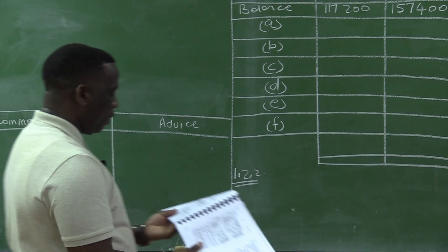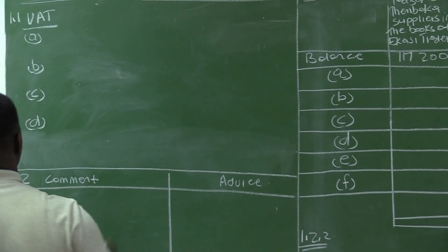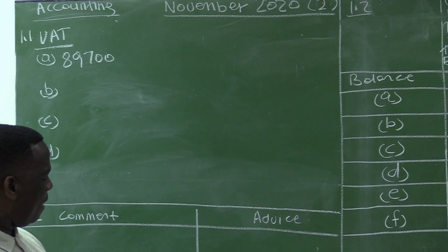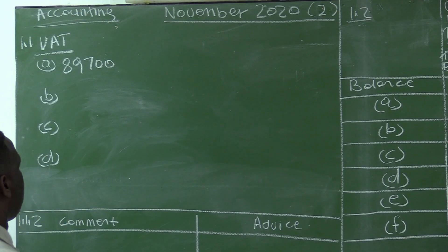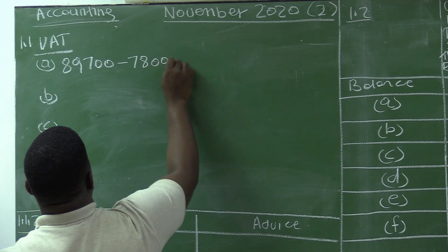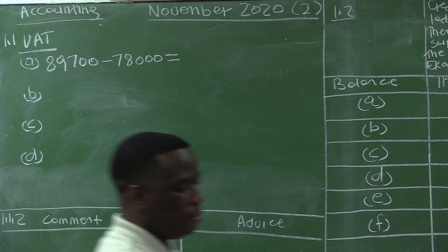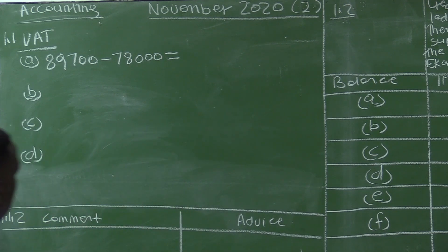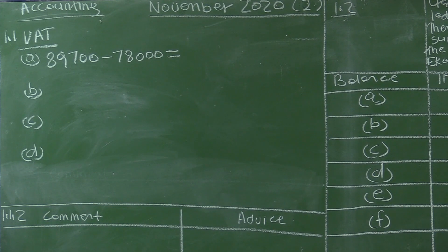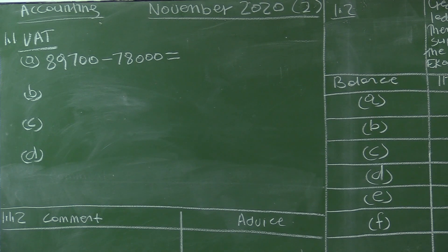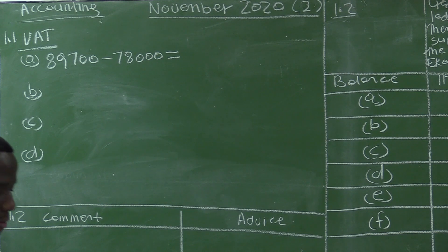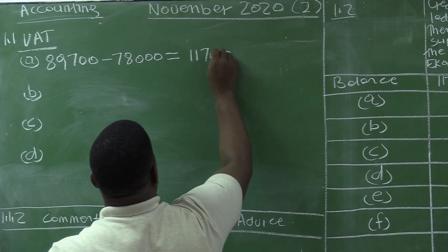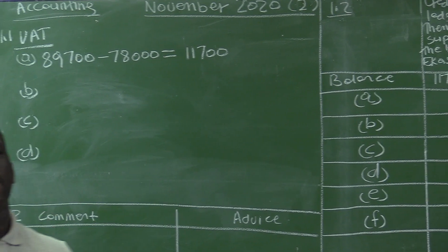The price including VAT is 89,700 and the price excluding VAT is 78,000. So: 89,700 minus 78,000 equals 11,700. Our VAT amount for item A is 11,700.